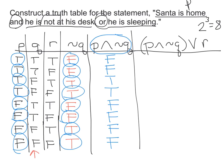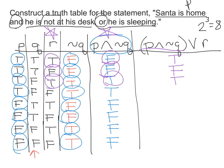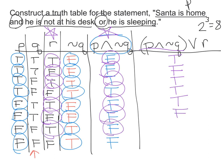Now that I have the left side of the expression, I need to take P and not Q together with the R column and do the disjunction — the OR. Remember, OR is only false if both are false. Going through each row: false OR true is true; false OR false is false; true OR true is true; true OR false is true; false OR true is true; false OR false is false; false OR true is true; false OR false is false.